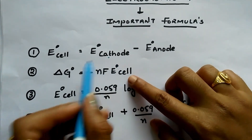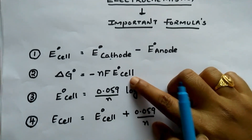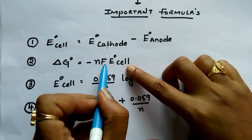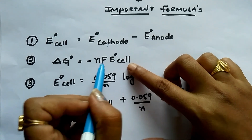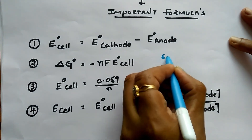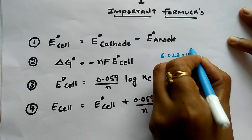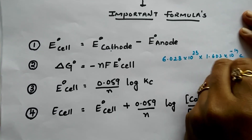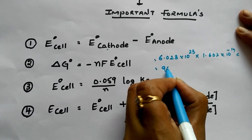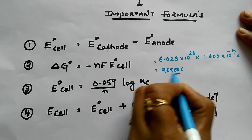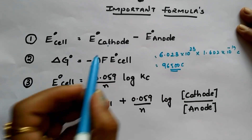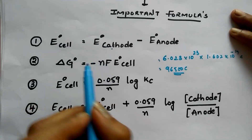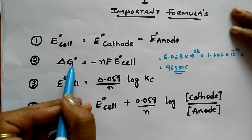E° cell is the standard EMF or standard electrode potential of the cell. F is Faraday — one Faraday. One mole of electrons equals 6.023 × 10²³ electrons, and each electron carries a charge of 1.602 × 10⁻¹⁹ coulombs. Multiplying these gives approximately 96500 coulombs as the value of one Faraday. N is the number of electrons transferred during the reaction. Substituting these values gives the standard Gibbs free energy change.